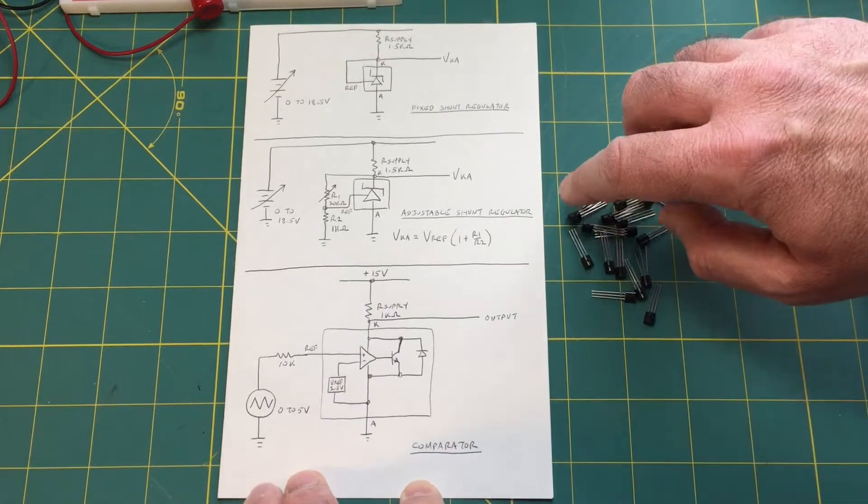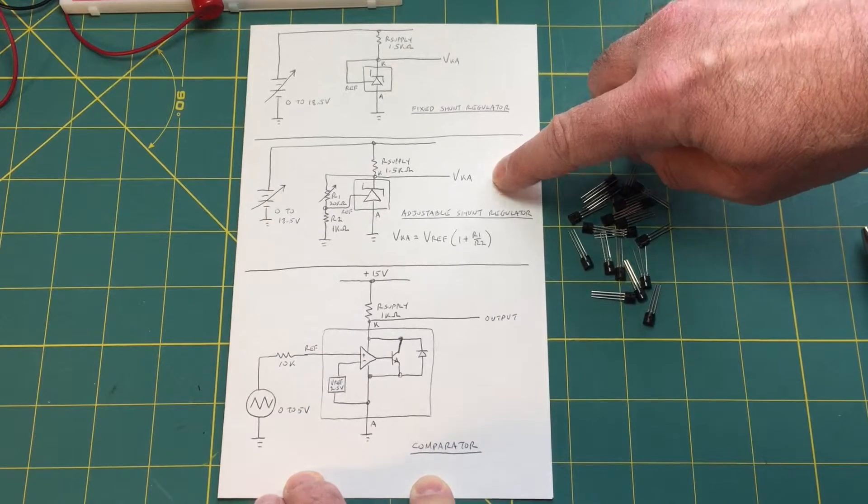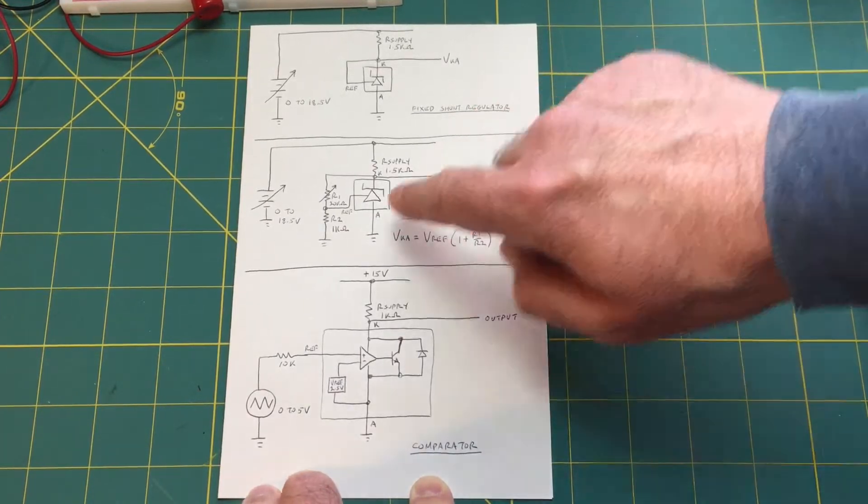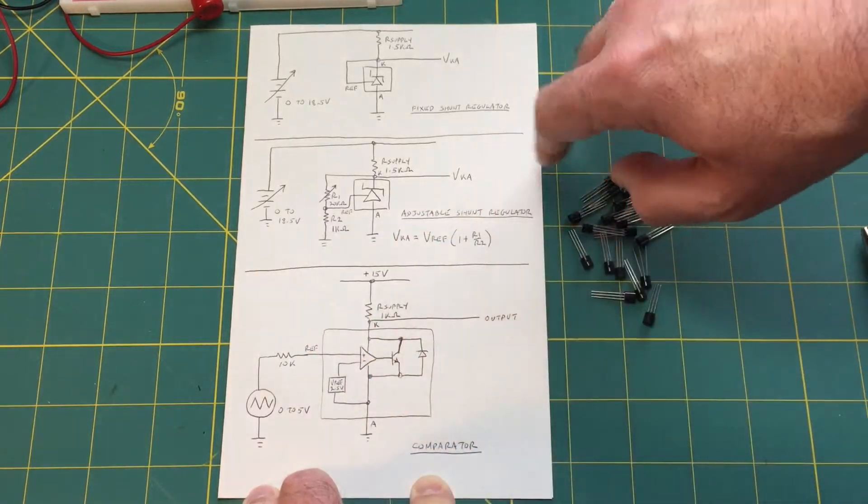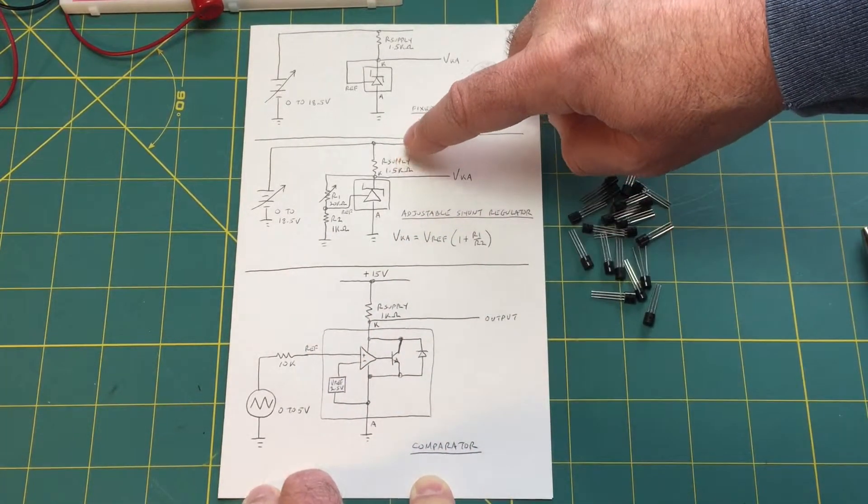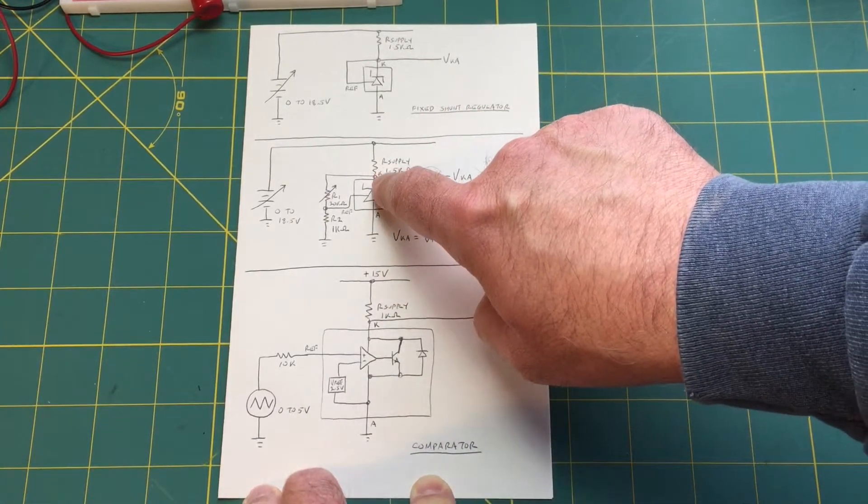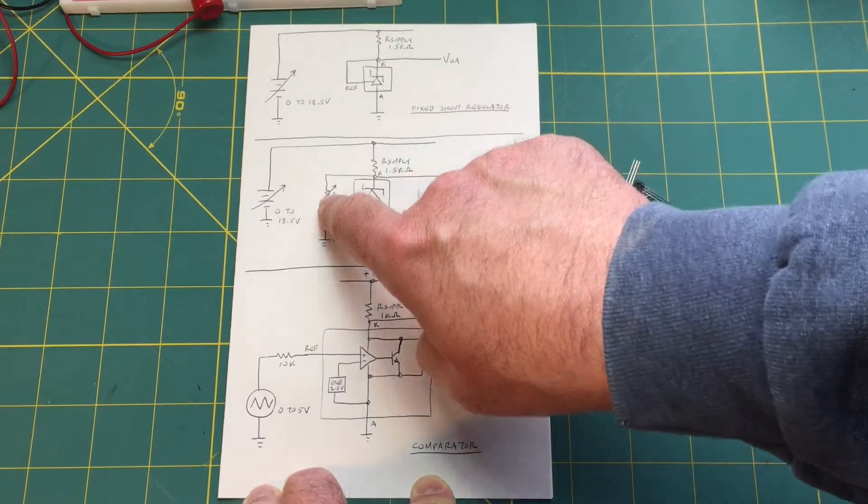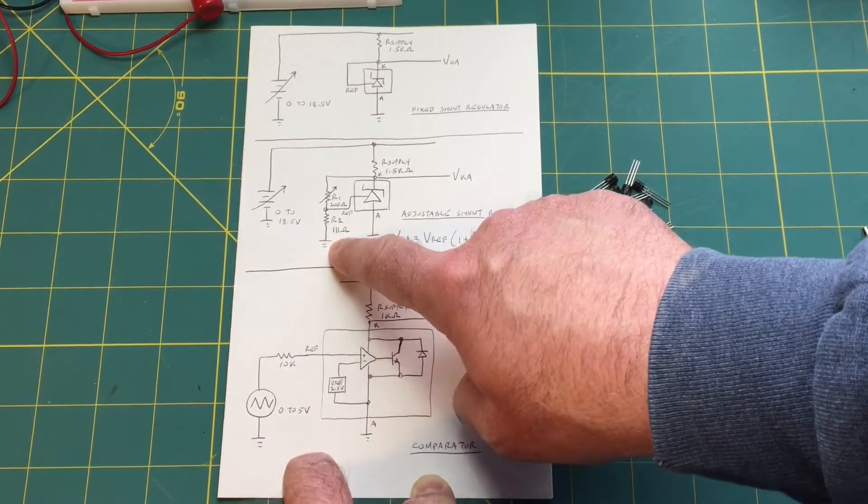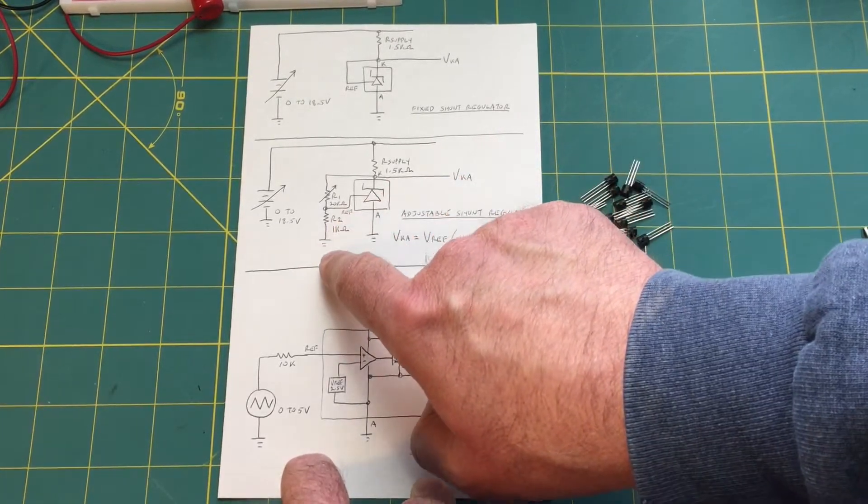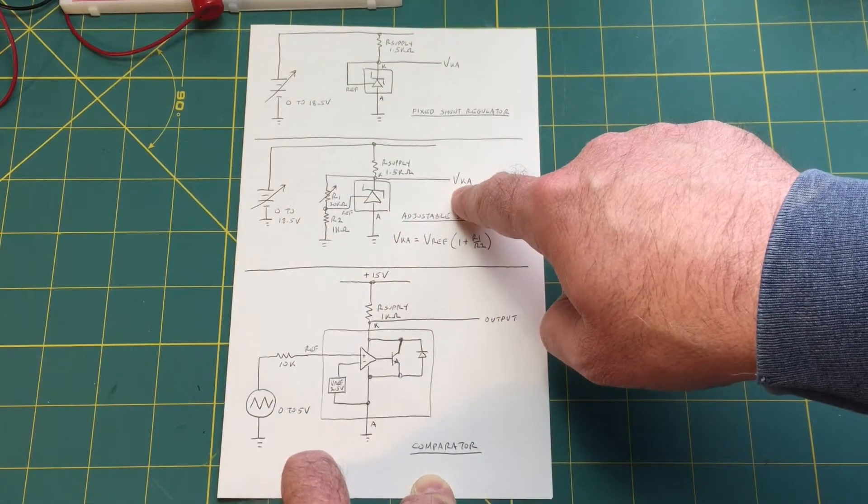Now the second circuit would be an adjustable regulator. It's very similar to the first circuit. We're going to have our input voltage again vary between 0 and 18.5 volts. Current will be going through our supply resistor but this time we're going to take the output voltage and we're going to put it through this feedback network this voltage divider so that we can adjust. If we adjust R1 we should be able to adjust what the output voltage is.